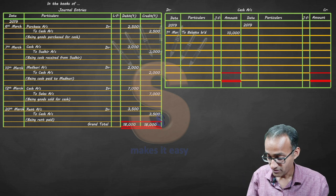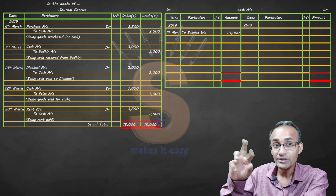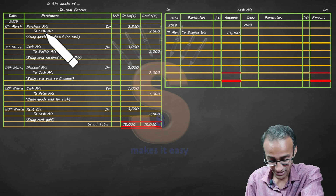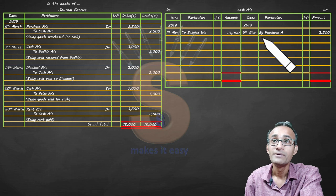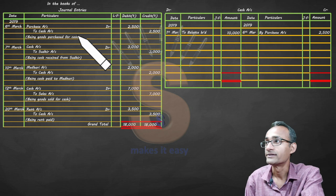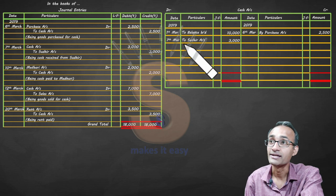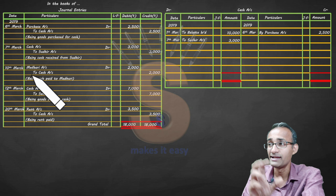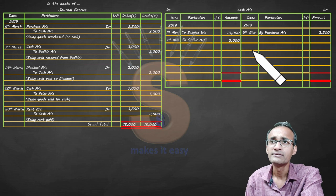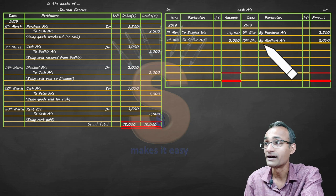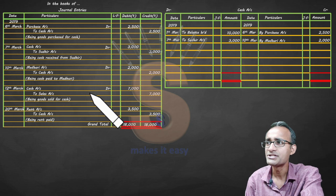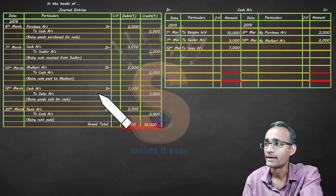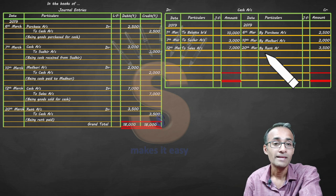Posting means taking every journal entry and placing it either on the debit or credit side of the ledger. 'To cash' means the credit side of cash. So on the credit side, 'By purchases — 500.' Then cash debit — on the debit side, 'To Sudhir — 3,000.' That is posting: journal to ledger. 'To cash' is credit; 'By Madhuri' is debit. There are only two choices in posting: debit or credit — 'By' or 'To.' Lastly, 'To cash' on the credit side. Posting is that simple.